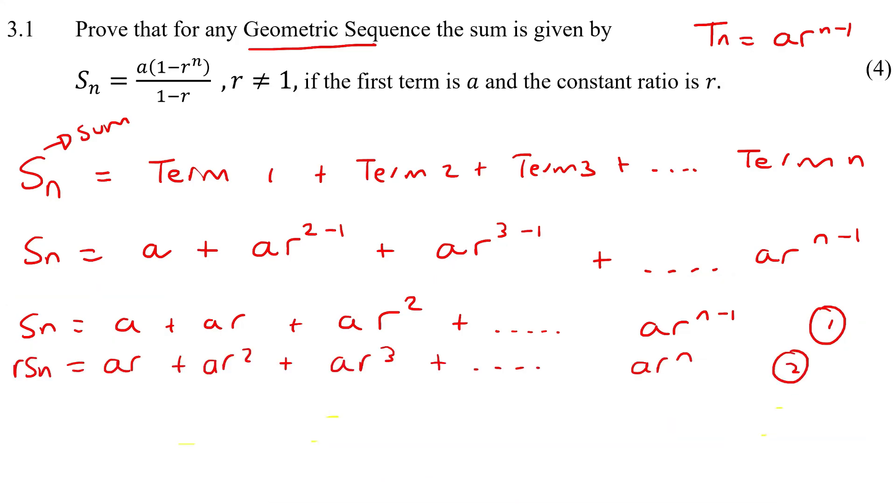Now depending on whether they wanted you to make this one or whether they wanted you to make the alternative which is where the r comes first, well that's going to affect the next step. Because in the next step we're either going to minus two from one or one from two.